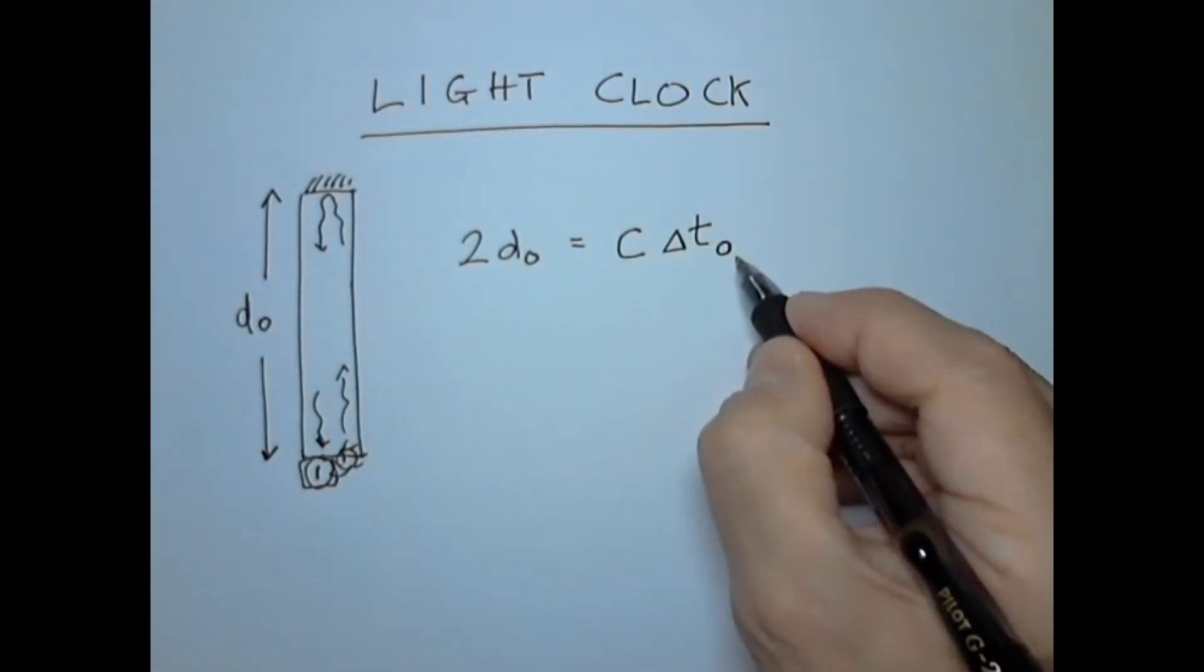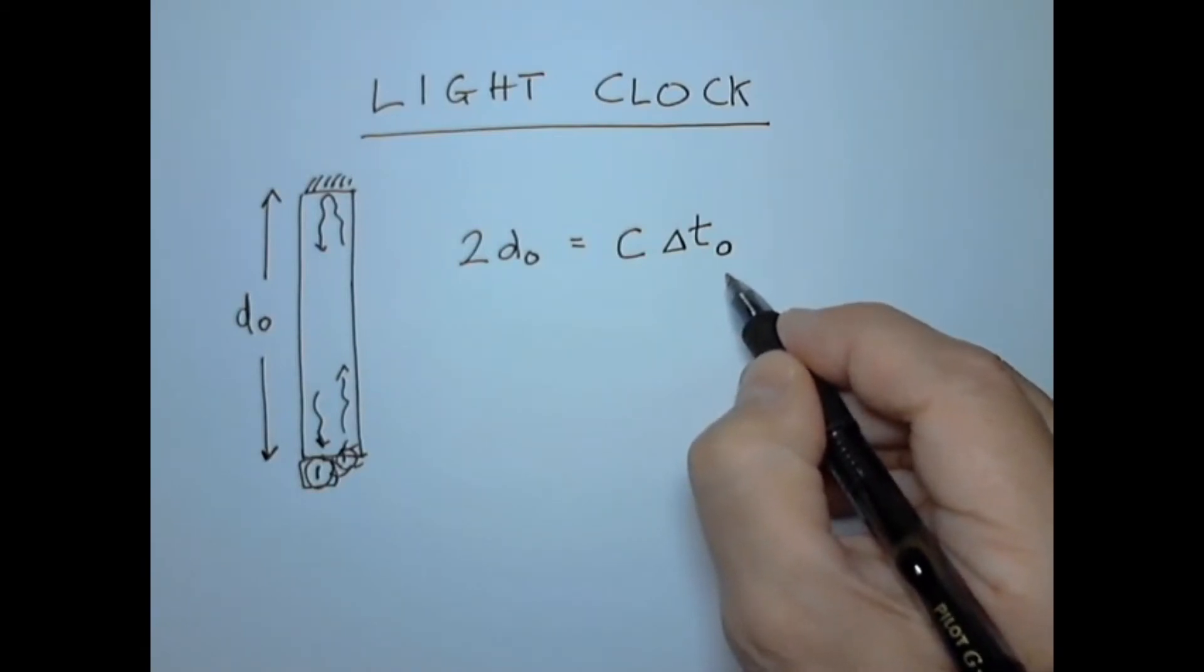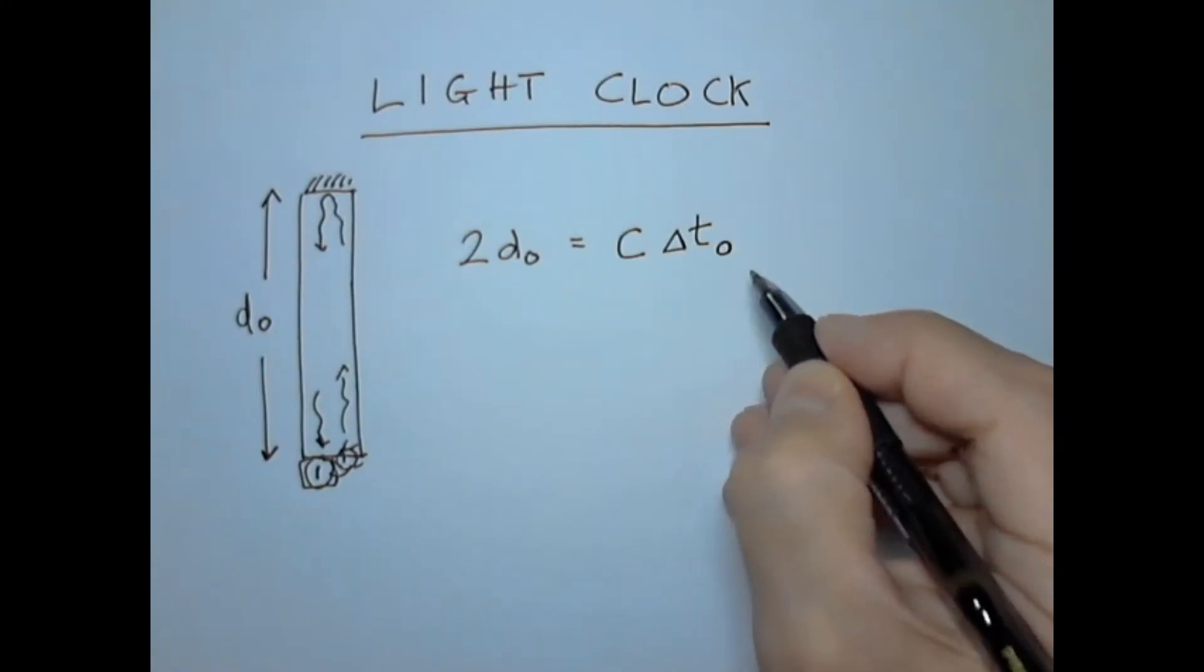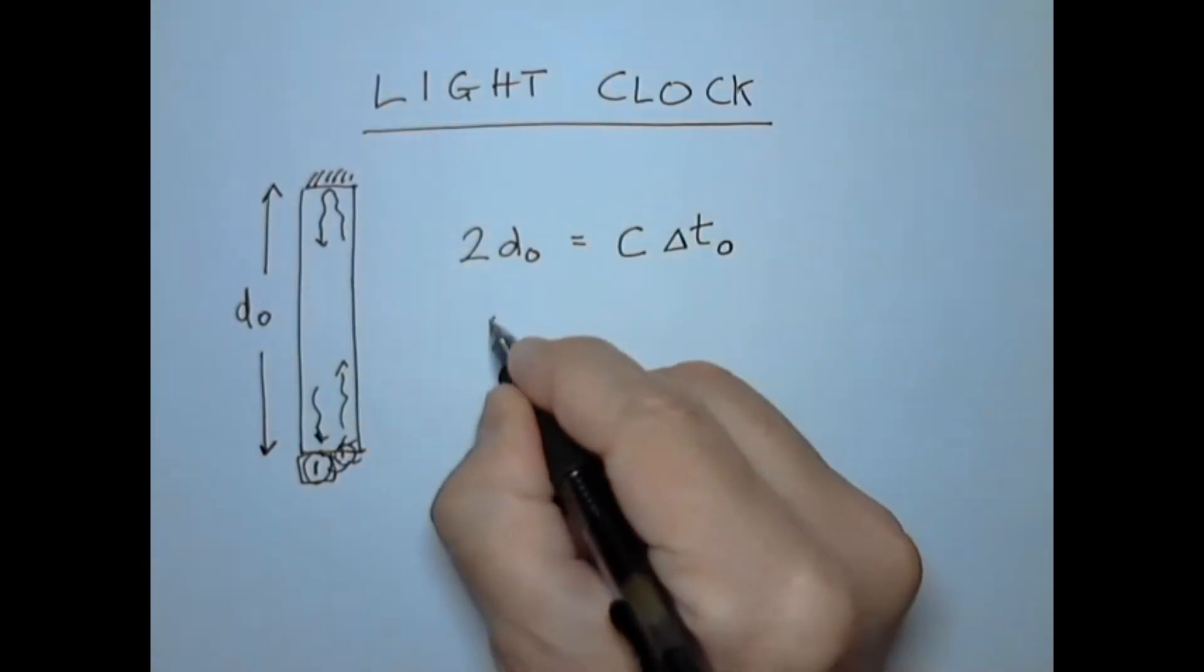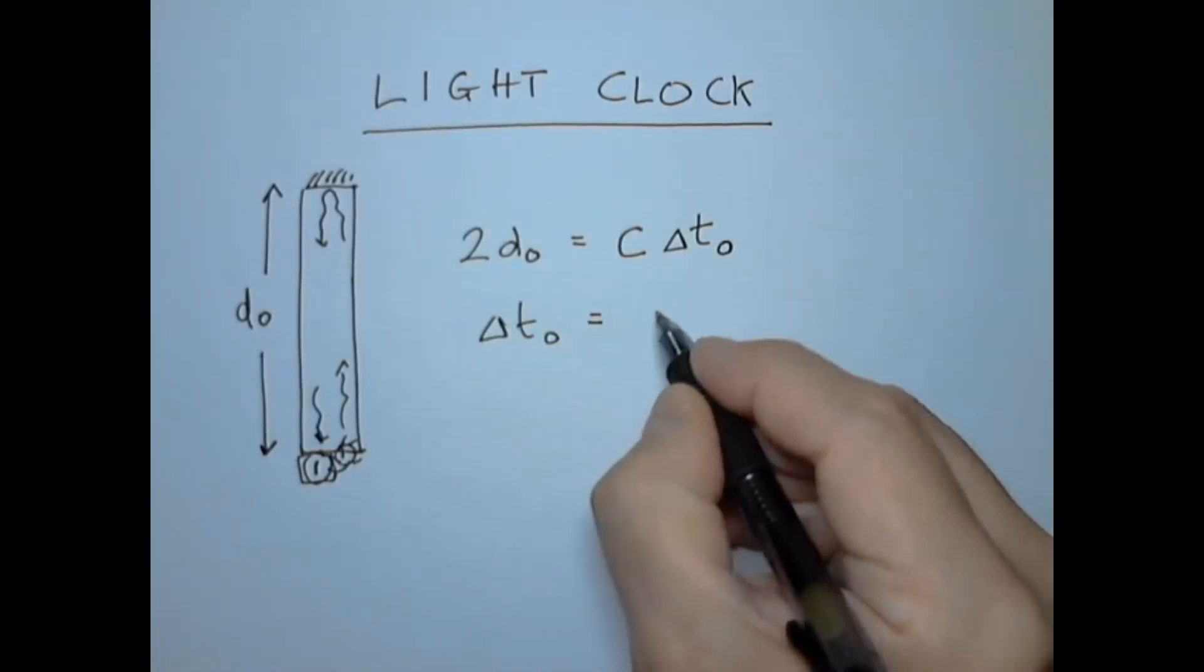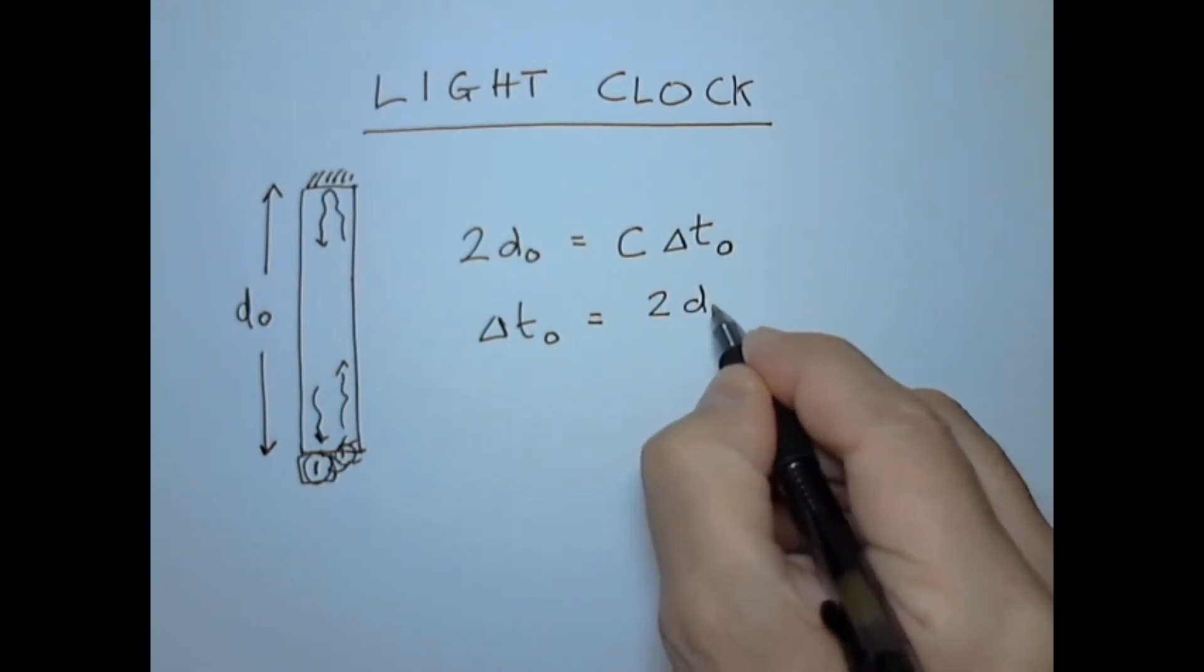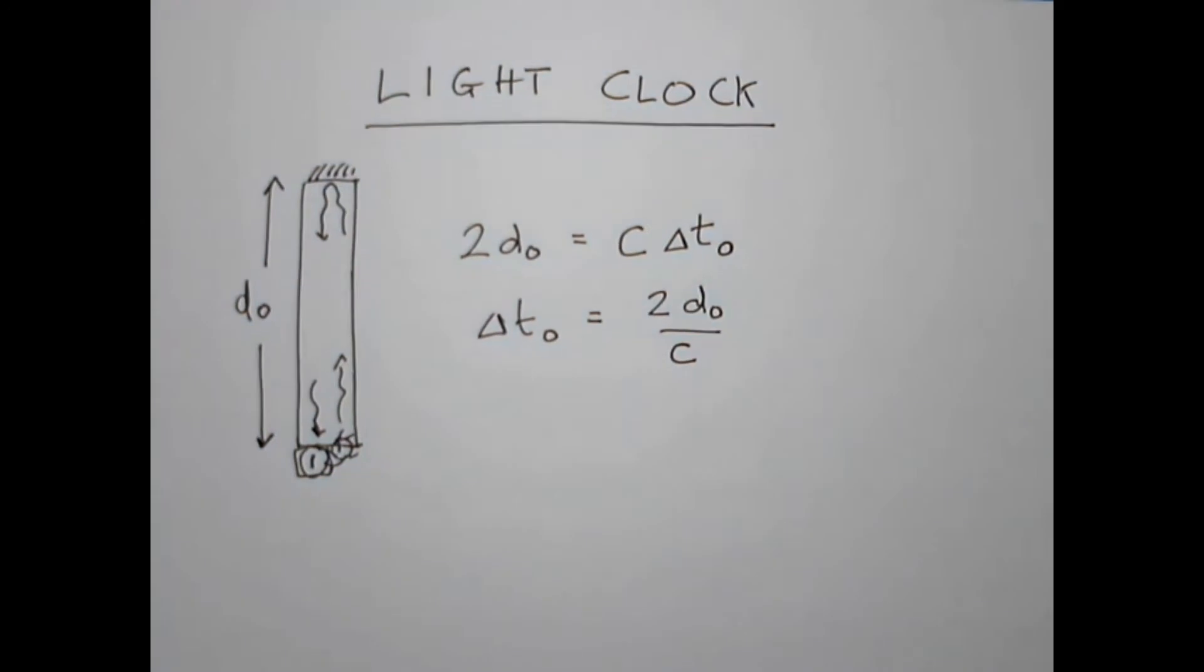Which is delta t 0 where the 0 shows that it's the value of delta t when the clock is at rest. The time interval delta t 0 is therefore given by delta t 0 is equal to 2d0 over c and we'll be using this result just now.